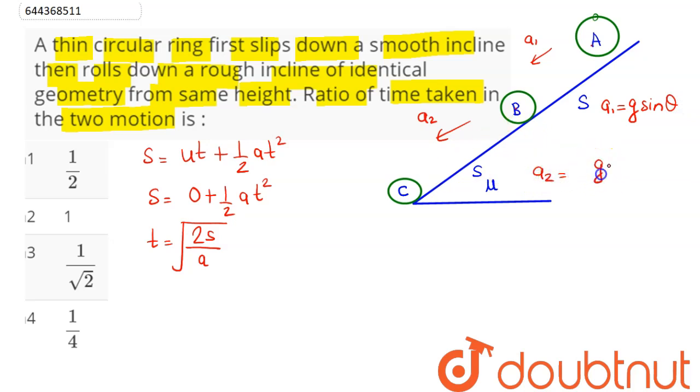A2 acceleration will be given here as for rotational and translatory motion, this is G sine theta divided by 1 plus I divided by MR square. For circular ring we know moment of inertia is MR square. Hence this comes out to be G sine theta divided by 1 plus 1, which is equal to G sine theta divided by 2.